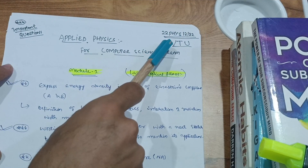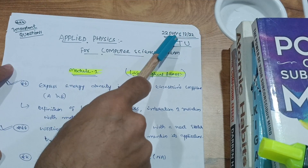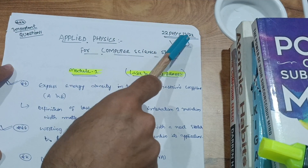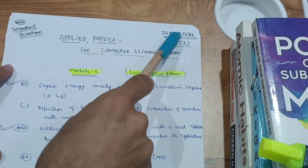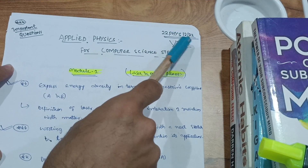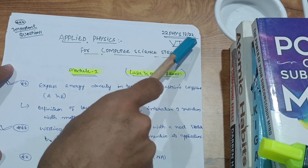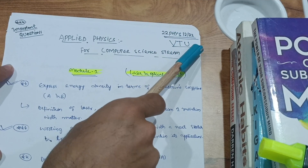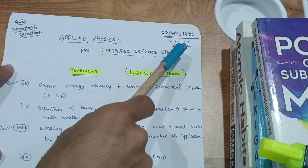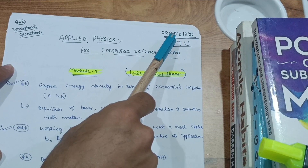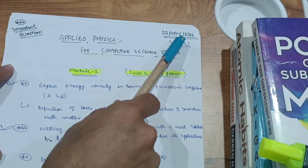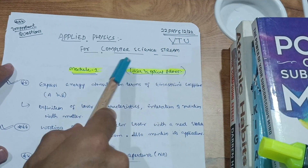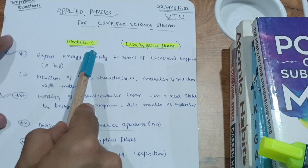Today I will discuss applied physics for the computer science branch students. The subject code is 22PHYS12 for the first semester second subject, and ABBPHYS22 for the second semester second subject.